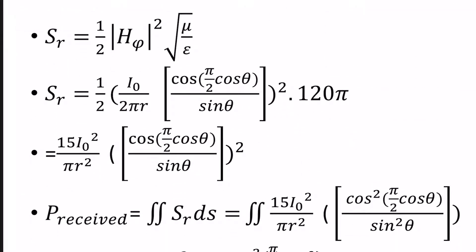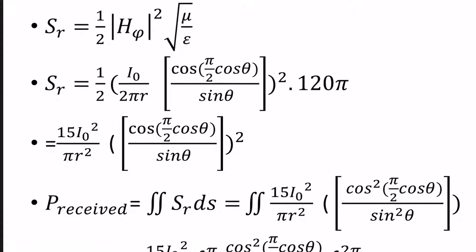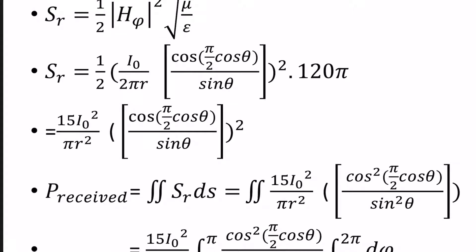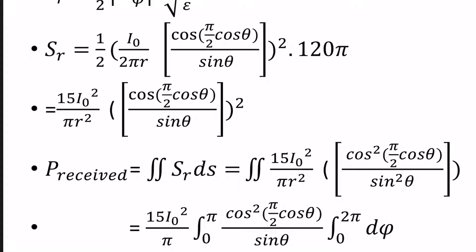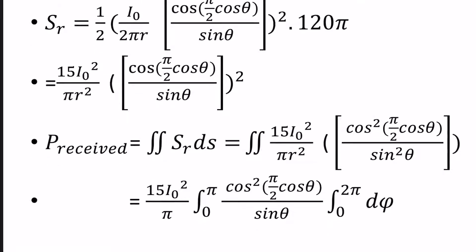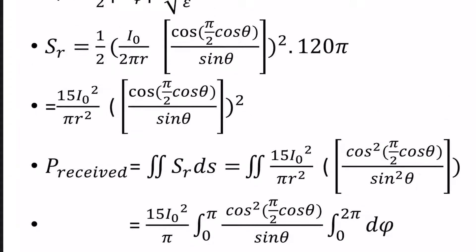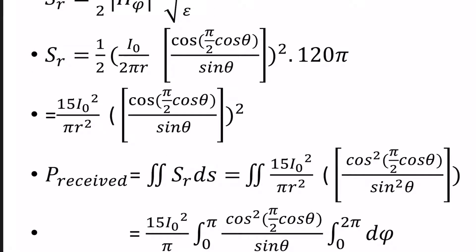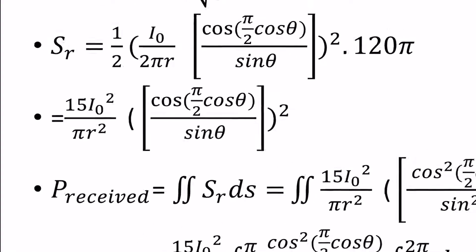We get: 1/2 × (i₀ / 2π r) × [cos(π/2 · cosθ) / sinθ] × 120π. This gives: 15 i₀² / (π r²) × [cos(π/2 · cosθ) / sinθ]² — the whole square. This is the Poynting vector.